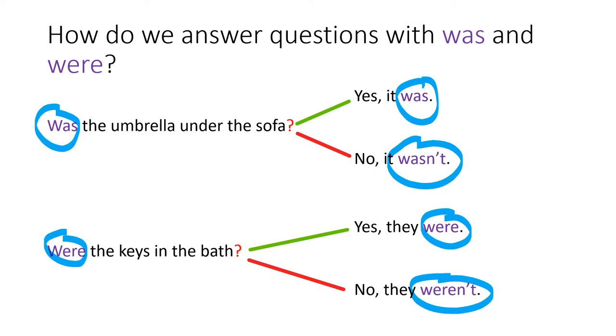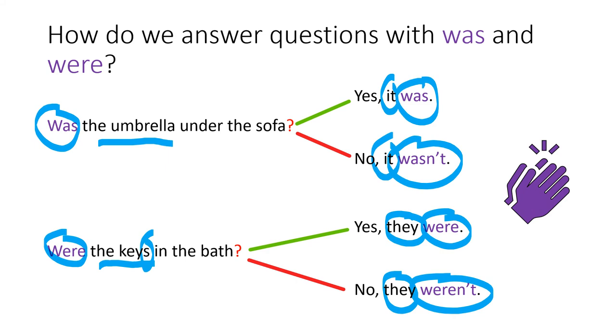One more thing to remember. In the first question, we are talking about the umbrella, right? It's a singular object. So in the answer, we have to use it. Yes, it was or no, it wasn't. And the second question, we're talking about the keys, which is plural. Can you see the s? Keys. Good. So in the answer, we have to use they. Okay. All right. Excellent. Bye!